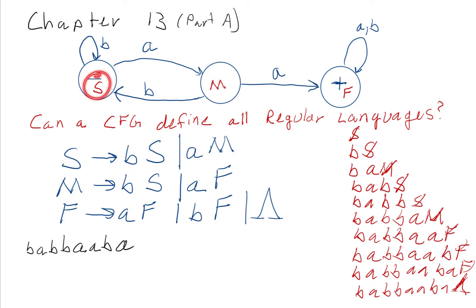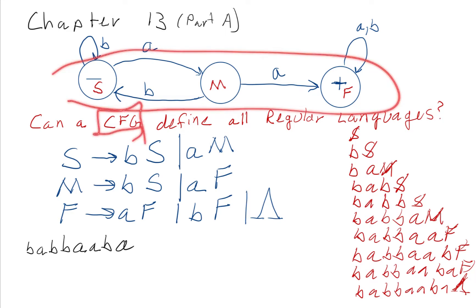If I'm in the start state and I read an A, then I go to state M. That's a proof for theorem 21 that says all regular languages can also be defined by a context-free grammar.